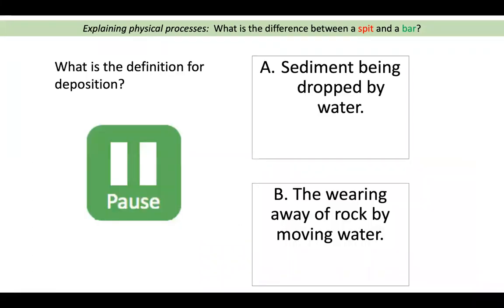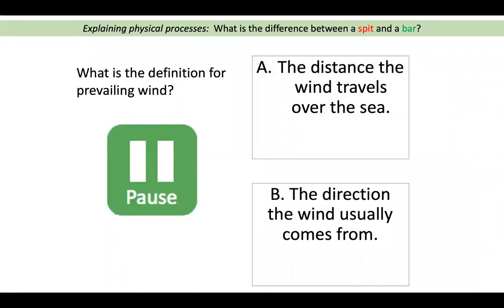Some quick definitions before we move on. What's the best definition of deposition? A: sediment being dropped by water, or B: the wearing away of rock by moving water? Everyone should have A. Next: what is the definition for prevailing wind? A: the distance the wind travels over the sea, or B: the direction the wind usually comes from? Everyone should have B.